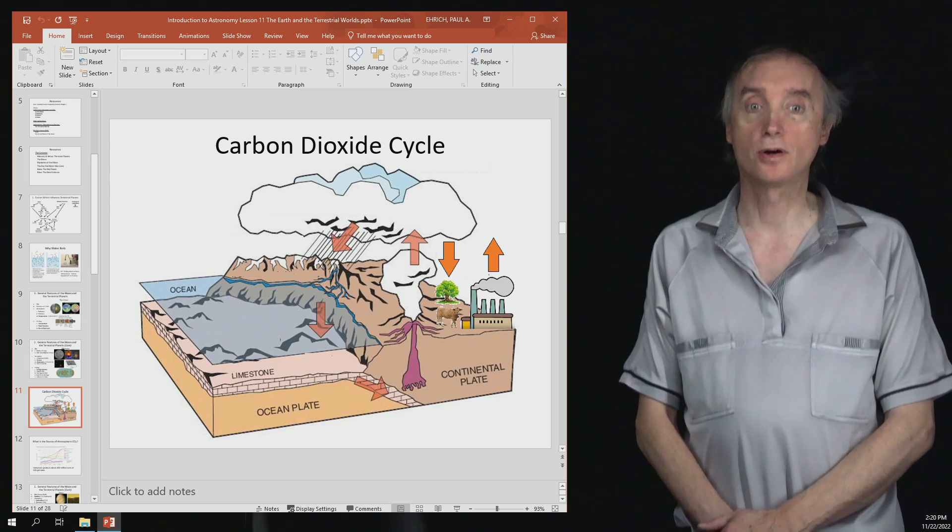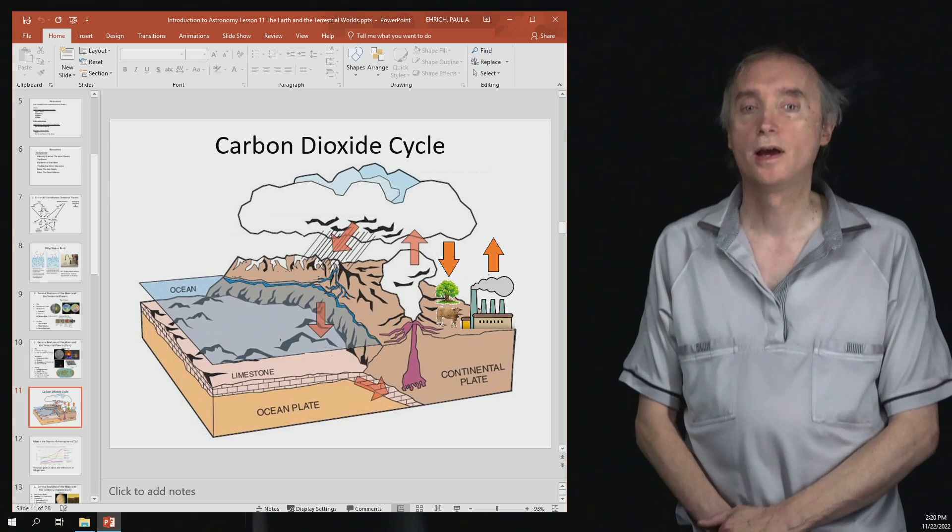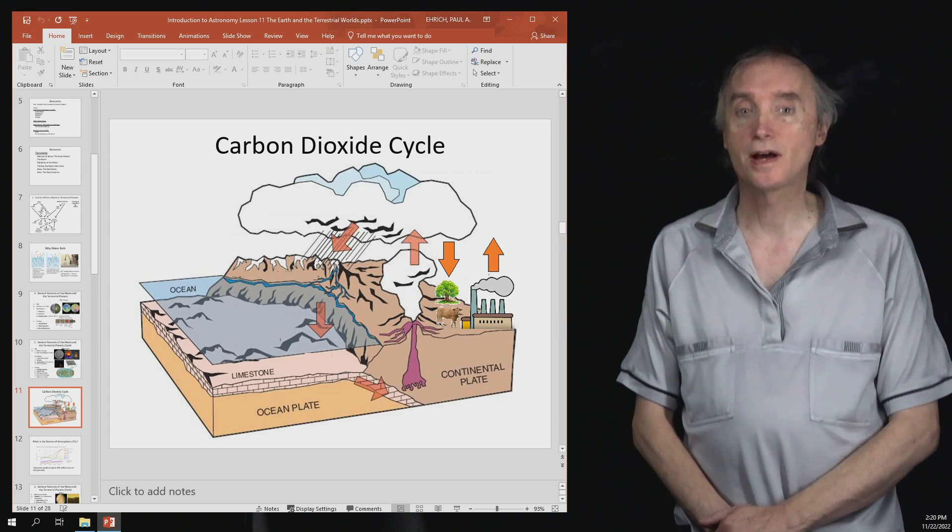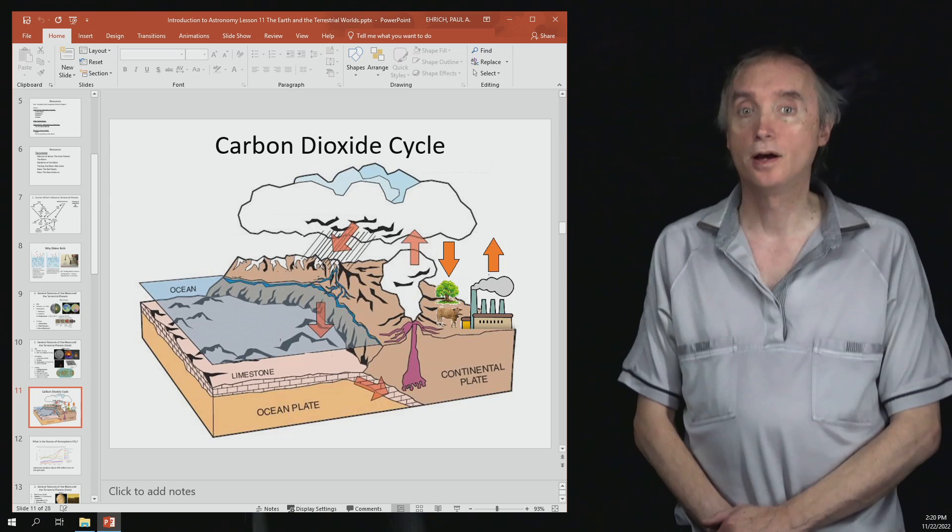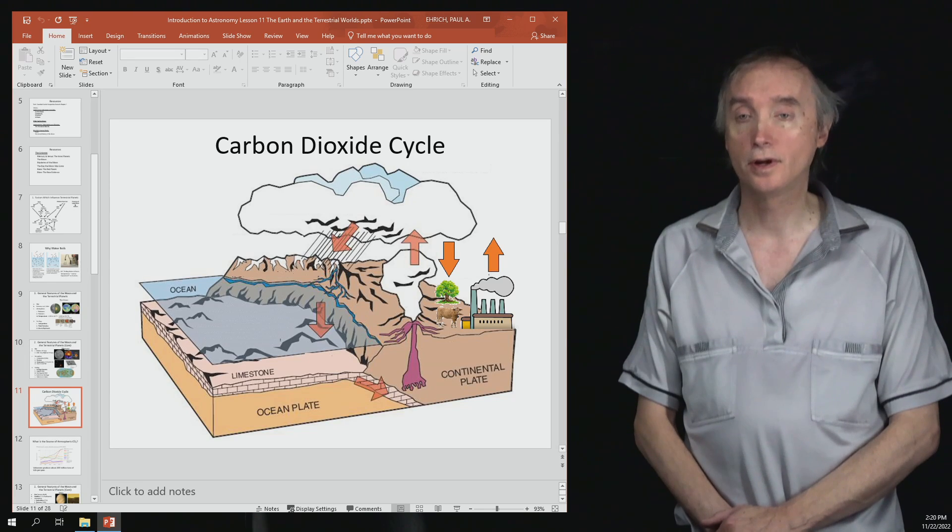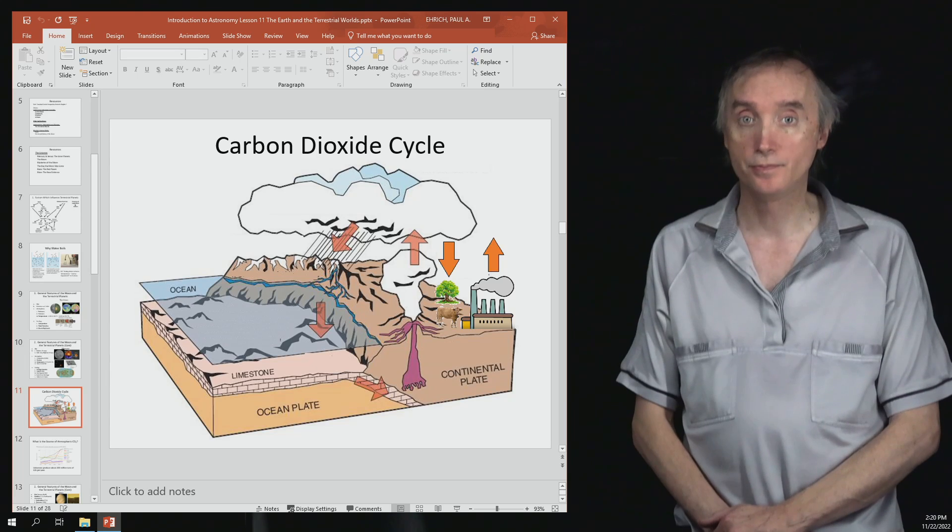This is also known as the carbon cycle. We're going to start our cycle with volcanoes. Volcanoes, in addition to water and other materials, emit carbon dioxide that goes into the atmosphere.